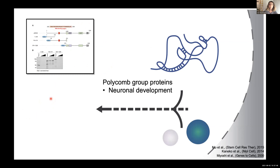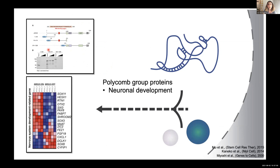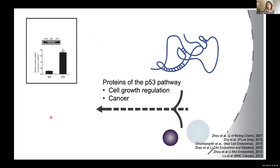There are two classes of proteins implicated in the function of MEG3. The first is proteins belonging to the Polycomb group family, such as Jarid2. Through this type of interaction, MEG3 acts to regulate the expression of important developmental and neurodevelopmental genes, as shown on this heat map.